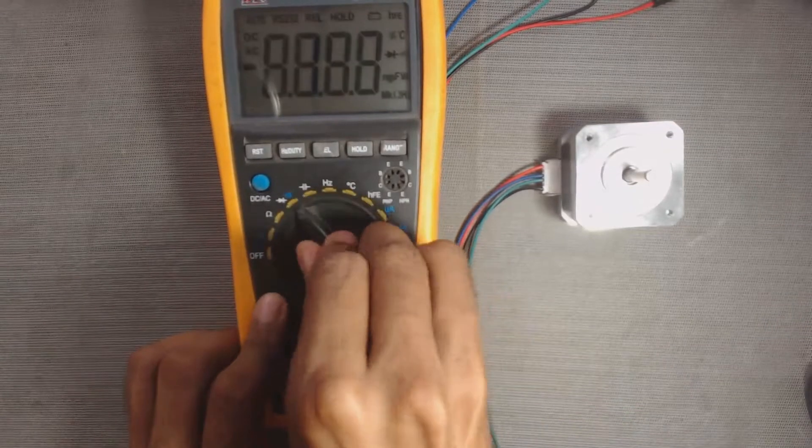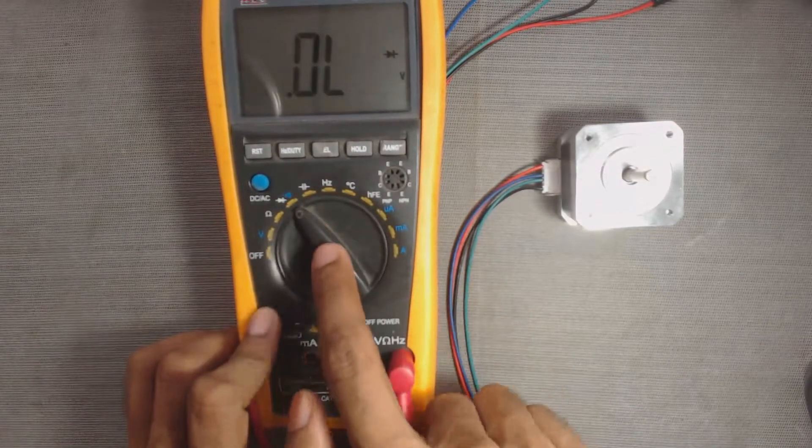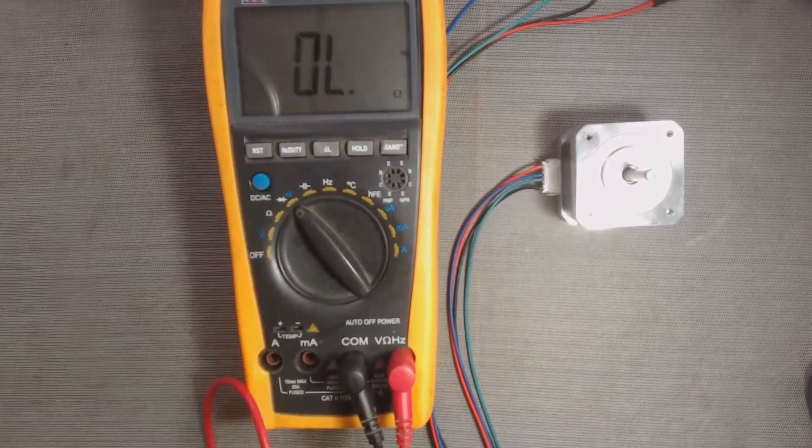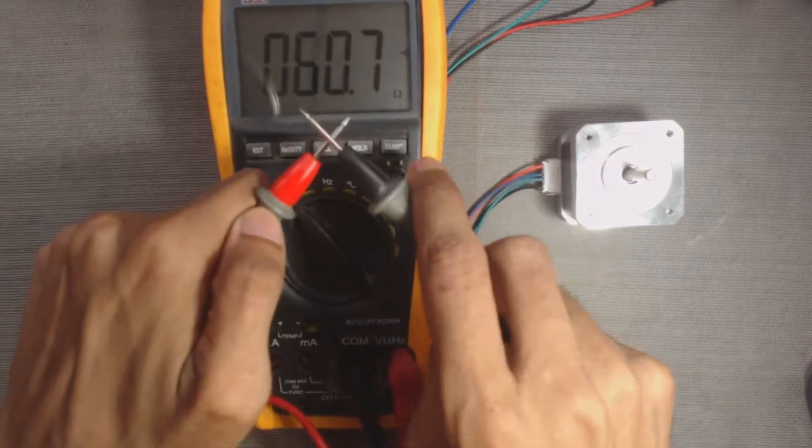To identify the two coils, first keep the knob of the multimeter to continuity test mode. We can hear the beep here.